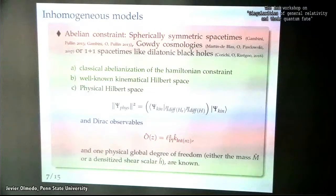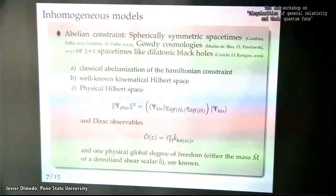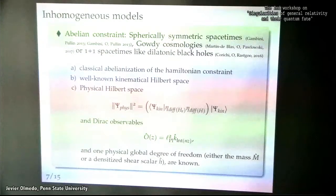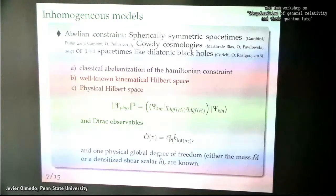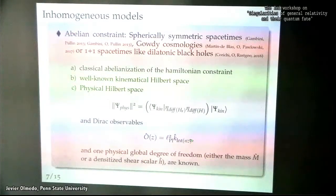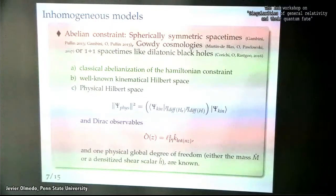Together with these Dirac observables in the quantum theory, there is a new family of Dirac observables that don't have a classical analog as another classical Dirac observable, but they have a classical interpretation: they correspond essentially to the areas of the Killing orbits. For instance, in the case of spherically symmetric spacetimes, these correspond to the areas of the two-spheres, and these areas are quantized.